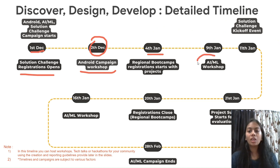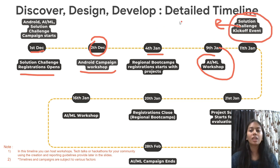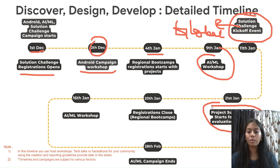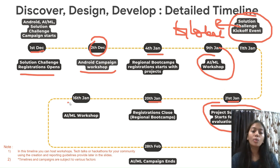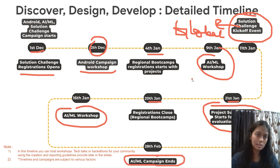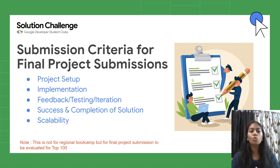On January 9th there is an AI/ML workshop. January 11th is the Solution Challenge global kickoff event. Project submissions for the top 100 start January 21st, as registrations close on January 20th. On January 16th there is another AI/ML workshop, and the AI/ML campaign ends on February 28th.